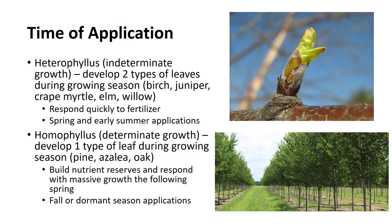Heterophilous indeterminate growth types develop two types of leaves during the growing season: leaves that were preformed within the bud and leaves initiated during the current season of growth — for example, birch, juniper, crepe myrtle, elm, and willow. Heterophilous determinate growth types develop one type of leaf during the growing season, leaves that were preformed within the shoot bud — for example, some pine, rhododendron, and oak. Heterophilous plants continue to grow late into the season as long as the ecological conditions are favorable and respond quickly to an application of fertilizer; they respond best to spring and early summer applications. While homophilous plants do not respond immediately with increased growth after an application of fertilizer, they build up nutrient reserves and respond with a massive growth during the next growth spurt, usually the following spring, and respond best to fall or dormant season applications. In conclusion, hopefully you learned about fertilizers for nursery plants as well as the types and timing of application.